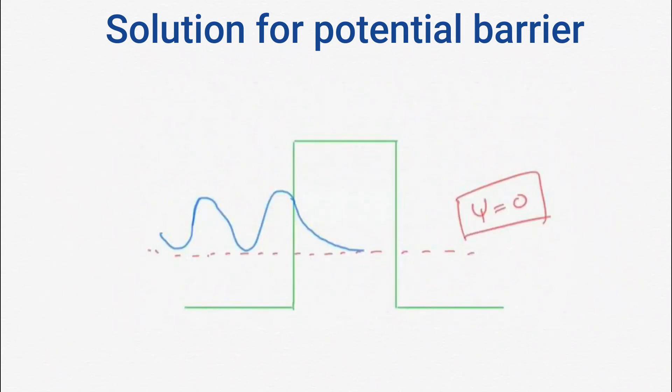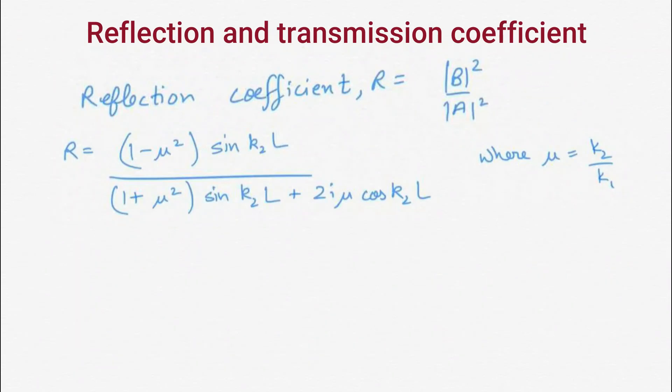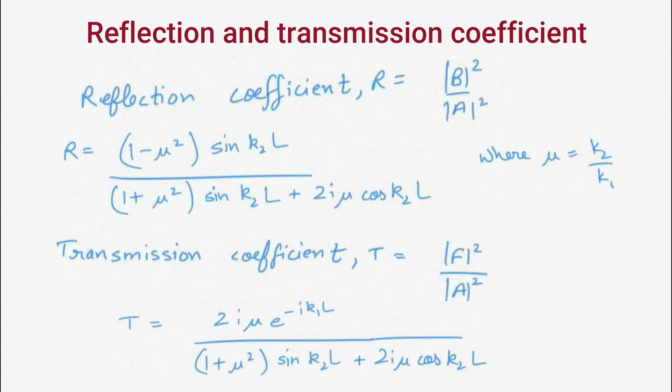This means with increase in value of width, more electrons are reflected back, and after a particular value no electron can be there. As a result of which there is zero wave function in region 3. Using boundary conditions in the solution for wave function, we can find constants A, B, and F. And the ratio of B²/A² gives the reflection coefficient and the ratio of F²/A² gives the transmission coefficient.